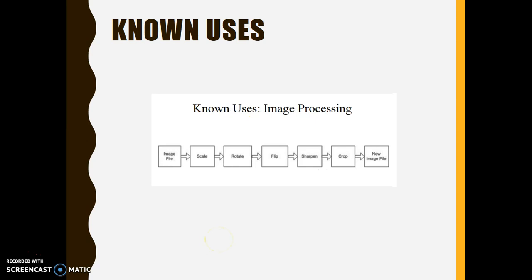Another example is that this architecture is used for image processing. This diagram shows that an image file passes through the different filters until it is transformed into a new image file.